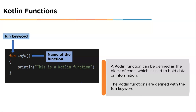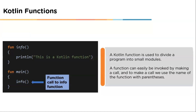A Kotlin function divides the program into small modules. These functions can easily be invoked by making a call, and to make a call we use the name of the function with parentheses. As we can see in the example, the function 'info' is getting invoked from the main function — from the main function we are making a call to the info function by using its name with parentheses. Now let's understand function parameters.